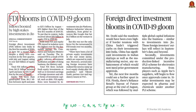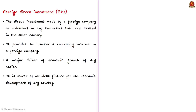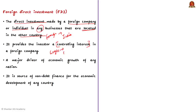FDI refers to the direct investment made by a foreign company or individual in a business located in another country. In our case, if a foreign company or individual invests in India, it is called foreign direct investment. Very importantly, FDI provides the investor a controlling interest in a foreign company. For example, Google invested around $5 billion in Reliance's Jio Platforms. FDI is a major driver of economic growth as it is a source of non-debt finance for economic development.